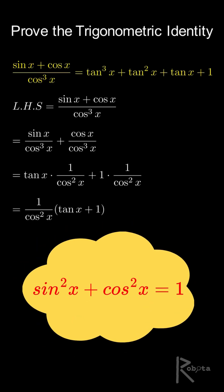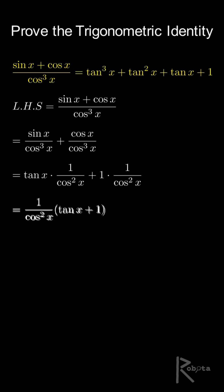Now remember that sine squared x plus cosine squared x equals 1. So 1 divided by cos squared x can be rewritten as sine squared x plus cos squared x divided by cos squared x.